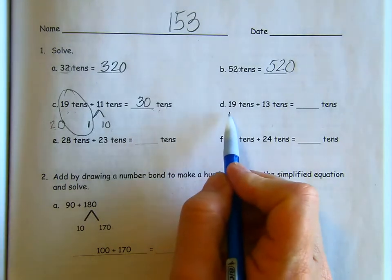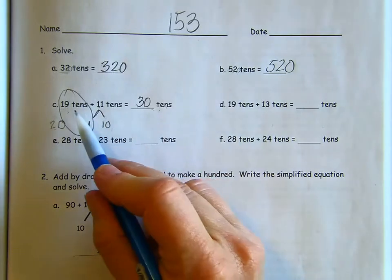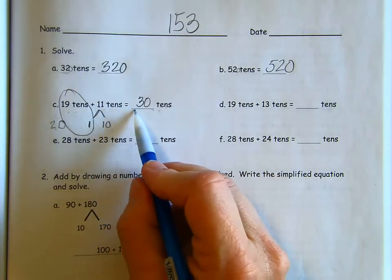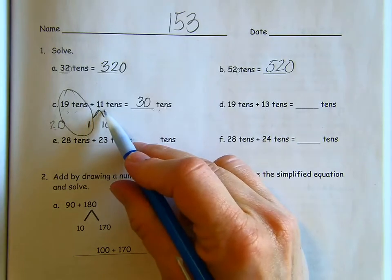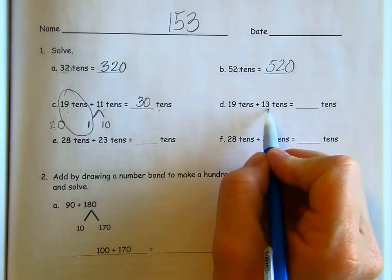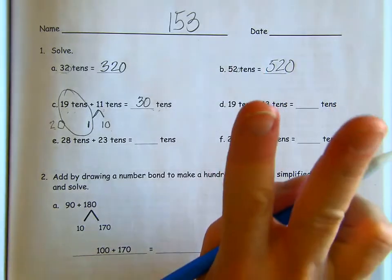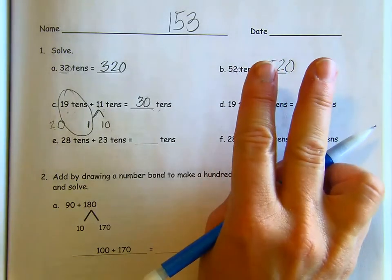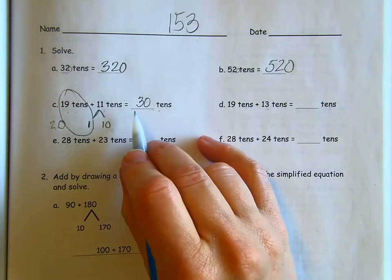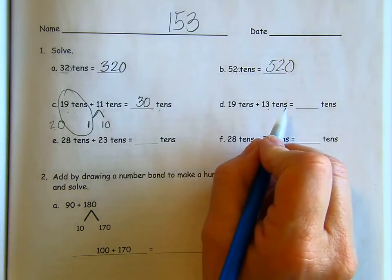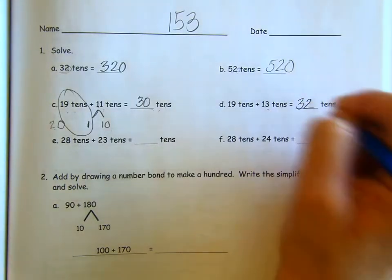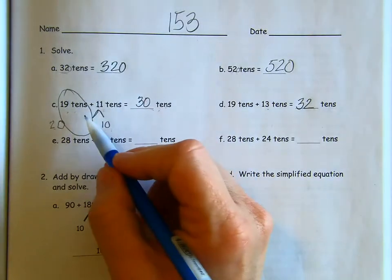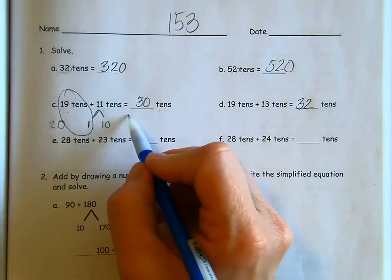This is 190 plus 110 equals 300. But it's a little bit easier when we're looking at those small numbers. We don't get intimidated. Now, let's use what we just figured out. 19 plus 11 is 30. This is 19 plus 13. How many more are they adding in here? Instead of 11, they're adding 13. That is two more 10s. So instead of 30 10s, how many is it going to be? Two more. 32 10s. We don't need to figure it out again because we just figured out 19 plus 11 is 30.